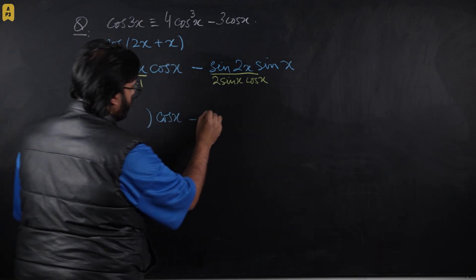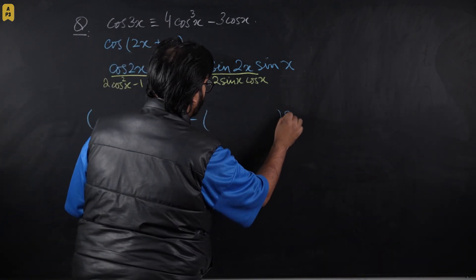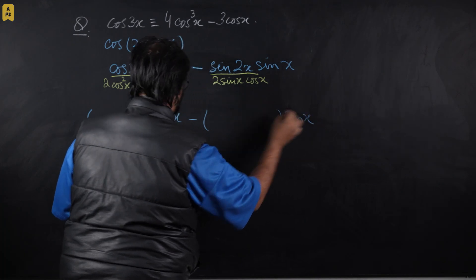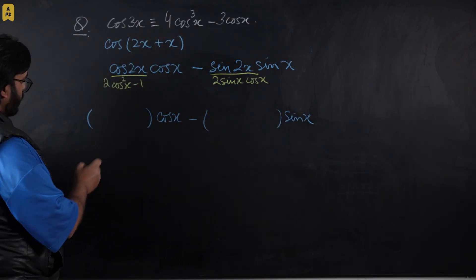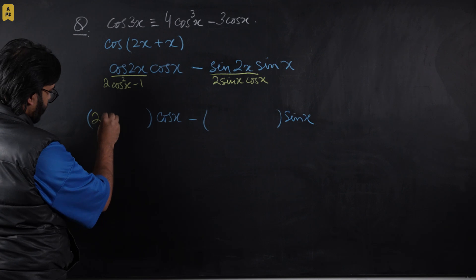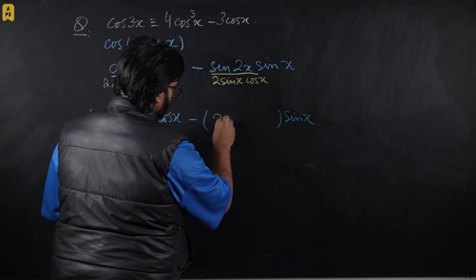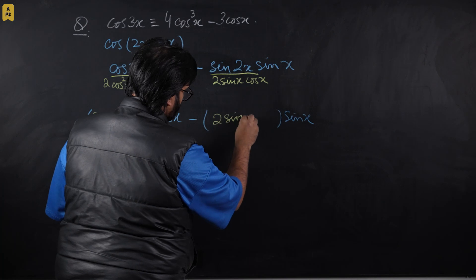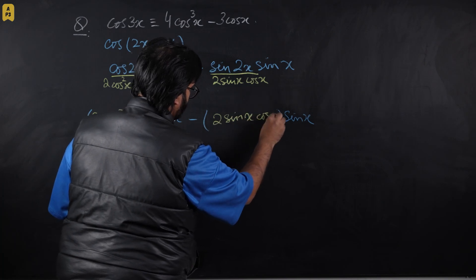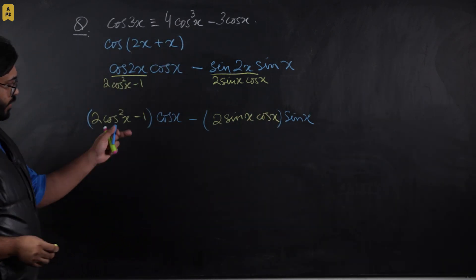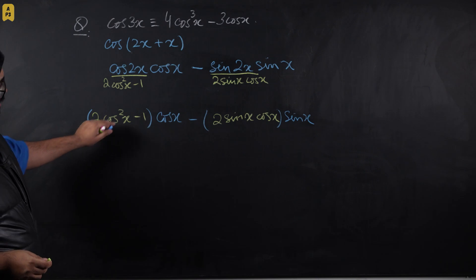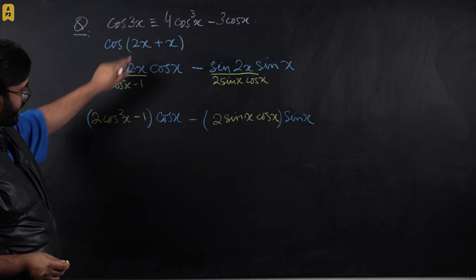Let's plug in these substitutions. This is 2cos²x - 1, and this is 2sin x cos x. Once we've done that, we can see that we have fixed the angle from 3x to x across this entire expression.